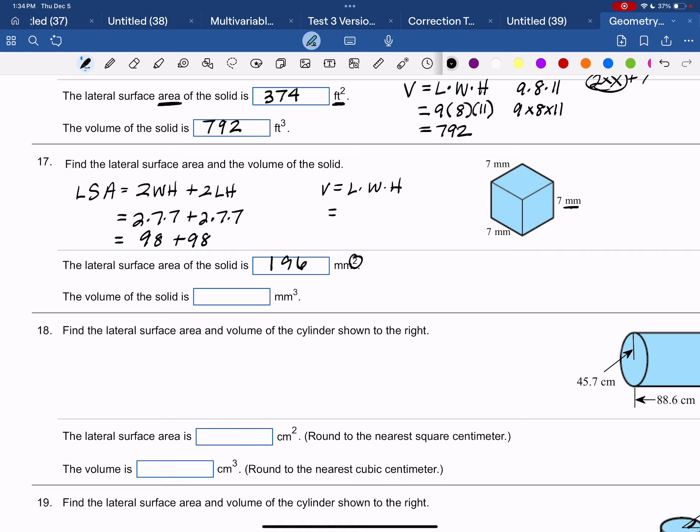Length times width times height is going to be 7 times 7 times 7, which is 7 cubed. And 7 cubed is 343 cubic millimeters because the volume is measured in cubes.